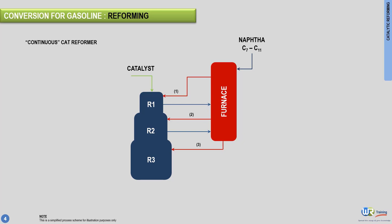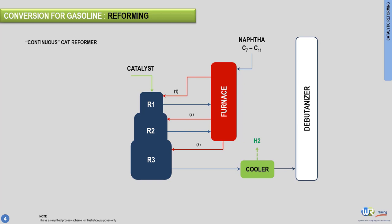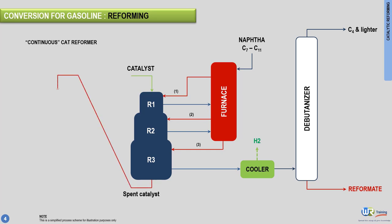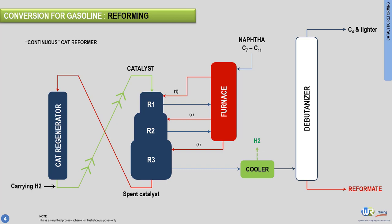After exiting the third reactor, the product called reformate is cooled. Hydrogen is separated, and the treated reformate feeds a debutanizer. The debutanizer separates the reformate from potential light byproducts. The spent catalyst exiting the bottom of the third reactor is sent to a catalyst regenerator, where it is treated with oxygen to get rid of potential contaminants and coke. Finally, hot hydrogen at the bottom of the regenerator carries the regenerated catalyst back to the reaction section.